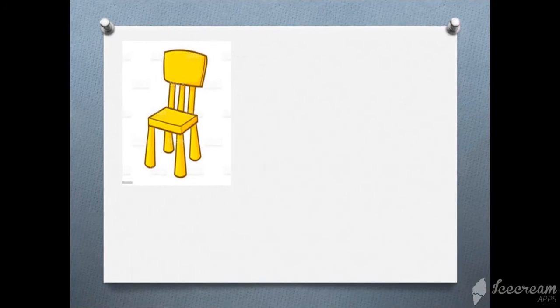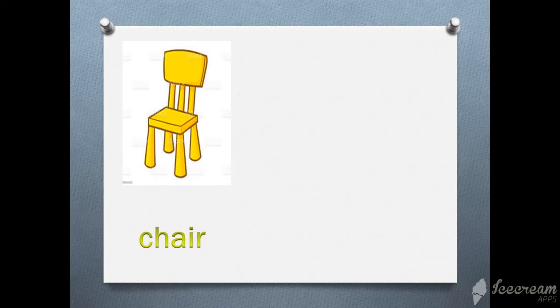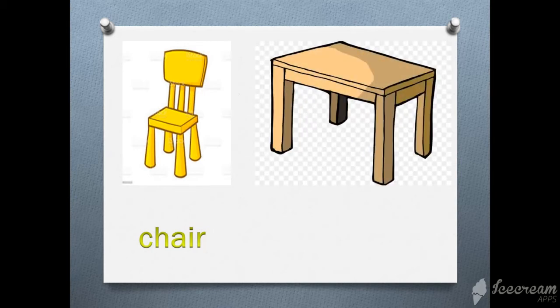In our class we have a chair. What's this picture? Chair. What is this? Chair. We sit on that chair. What is this? Chair. And what is this? Table. What is this? Table. Excellent.